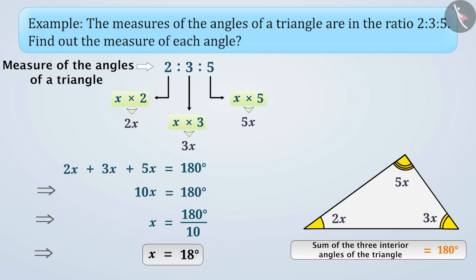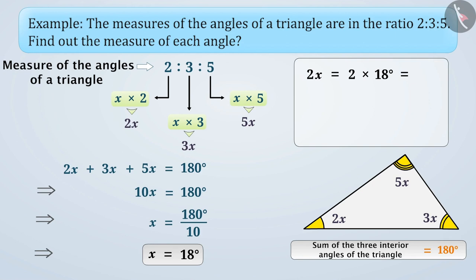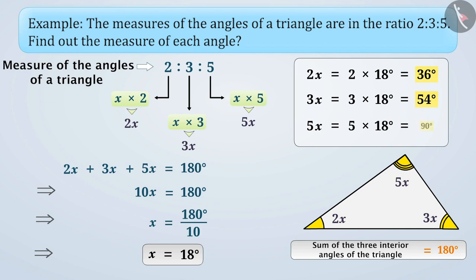Since we have found the value of x, we can now find the measures of the angles of the triangle. Here, 2x equals 2 multiplied by 18 degrees, which is 36 degrees. 3x equals 3 multiplied by 18 degrees, which is 54 degrees. 5x equals 5 multiplied by 18 degrees, which is 90 degrees. Therefore, the measures of the angles of the triangle are 36 degrees, 54 degrees, and 90 degrees.